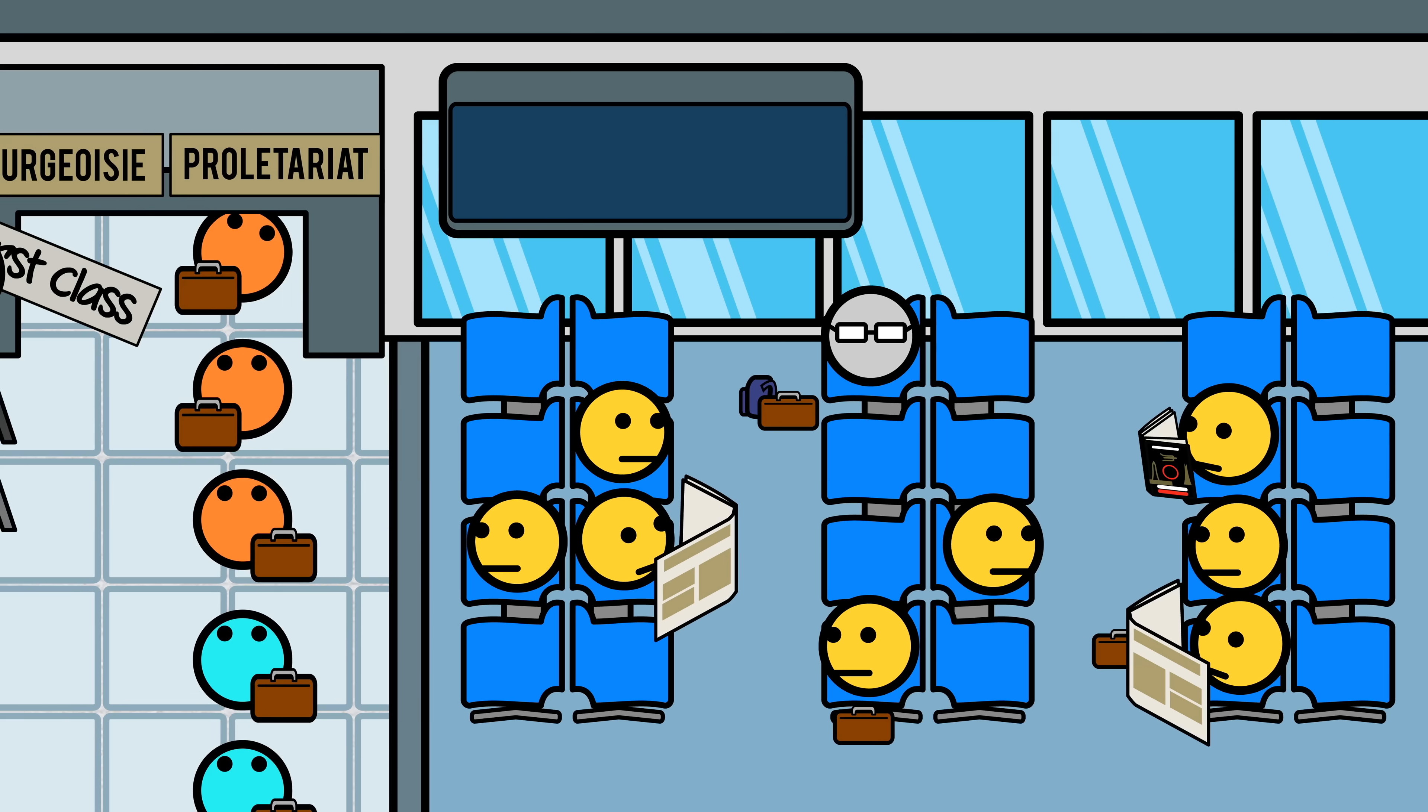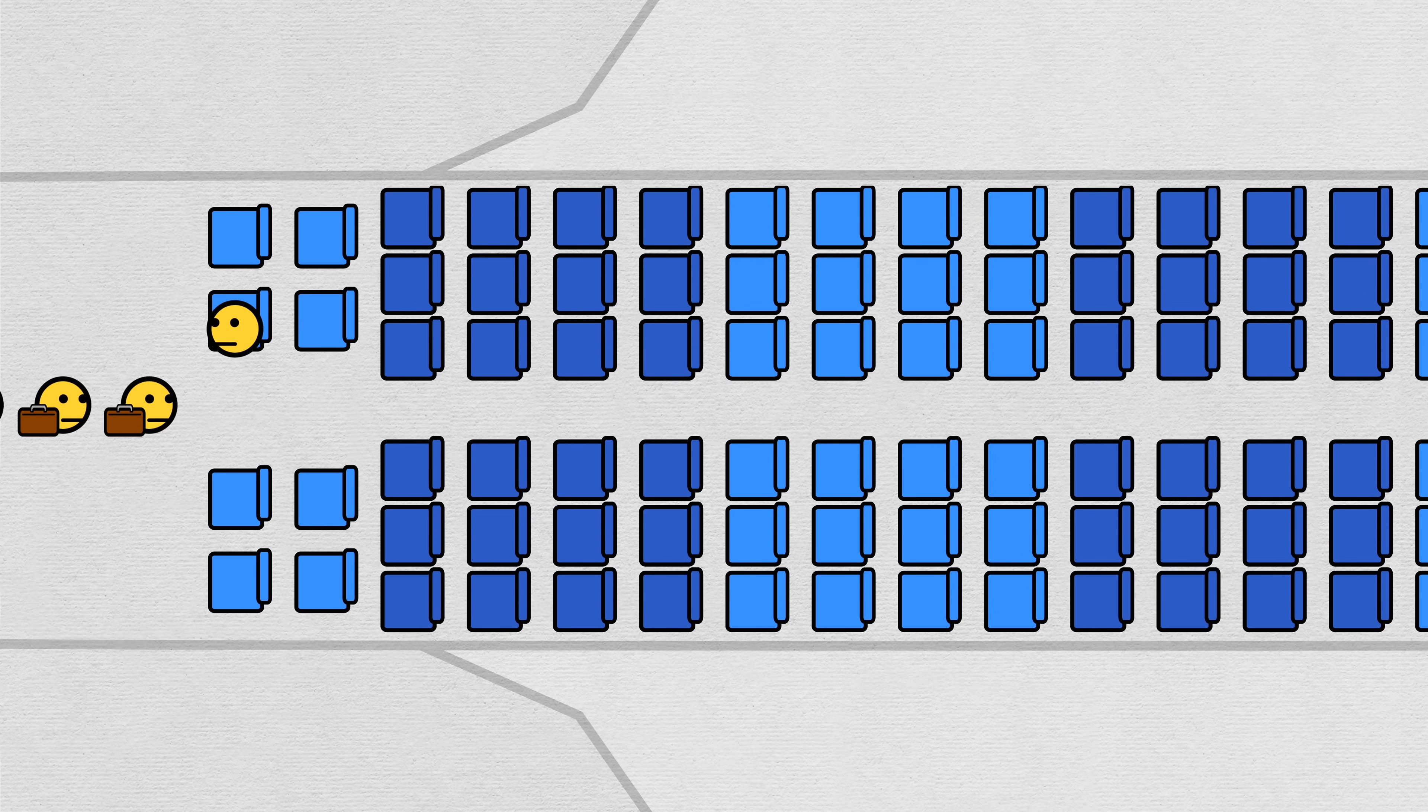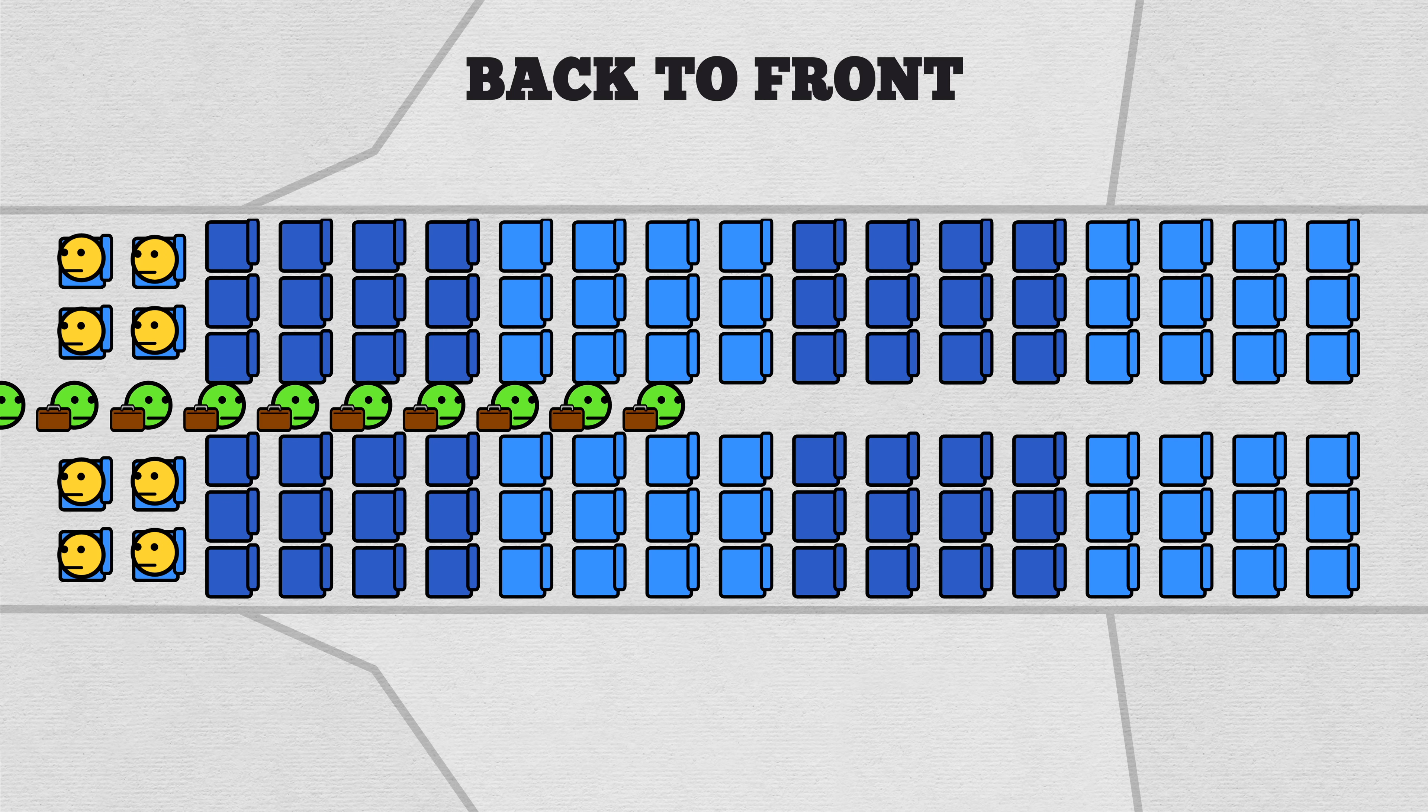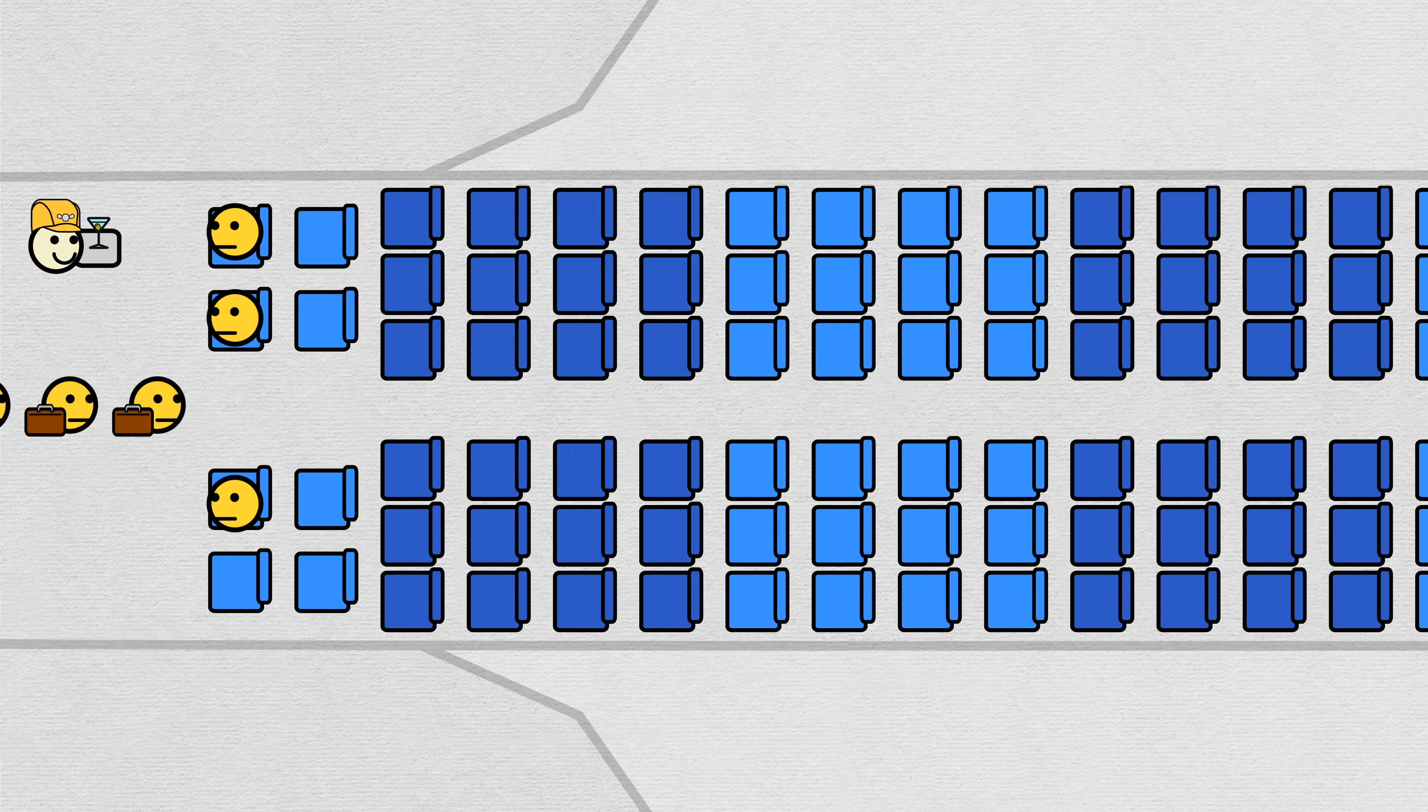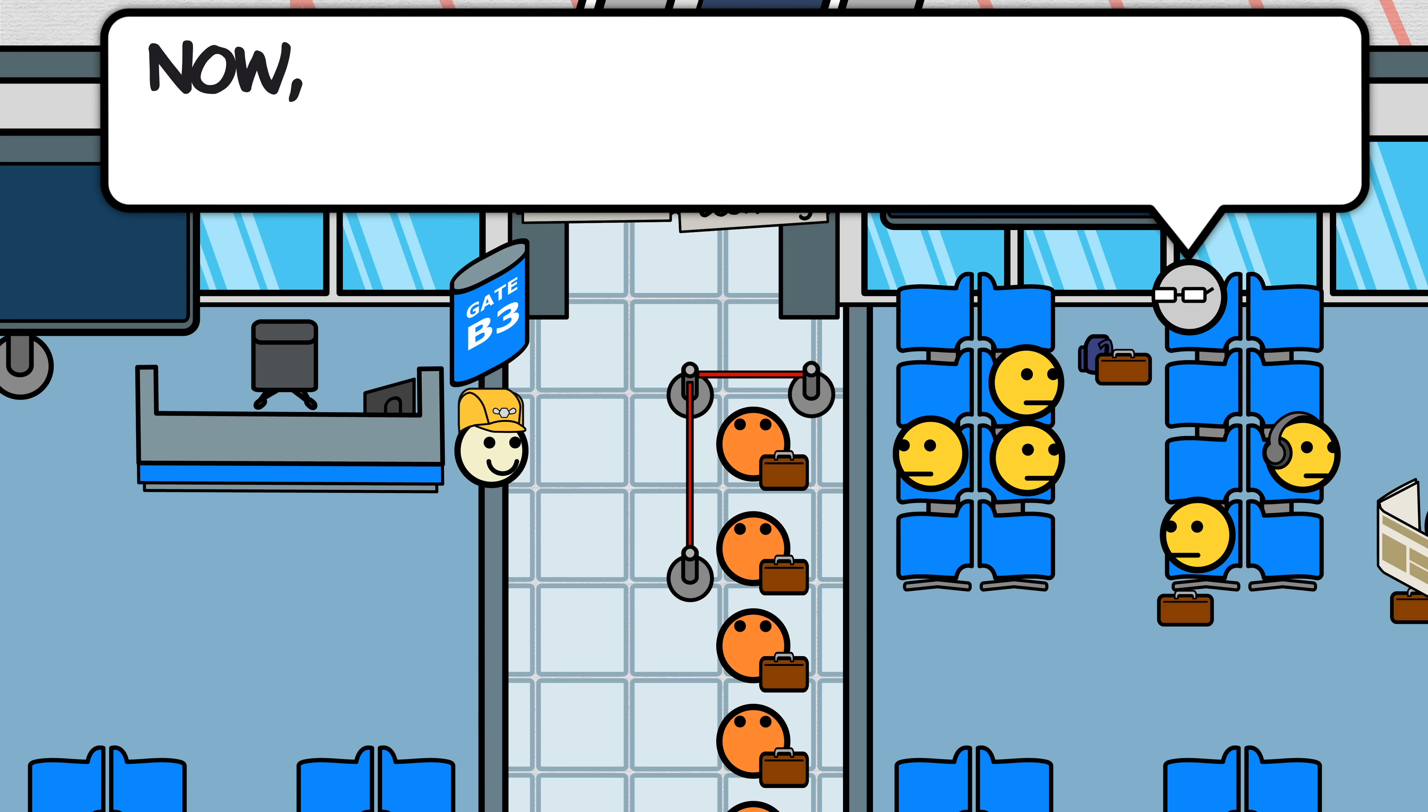Look familiar? This is where we acknowledge the class structure of airplanes. Real planes look like this and first class boards first, front to back, before the prole economy file in back to front. So excluding pre-boarding, all airlines start with a little of the slowest boarding method you could intentionally design.